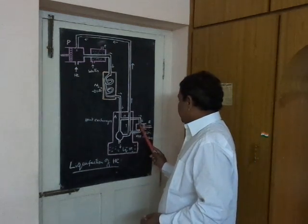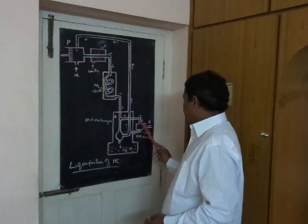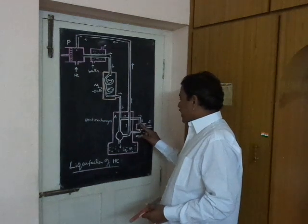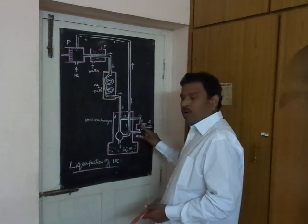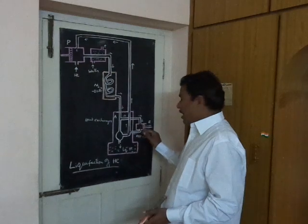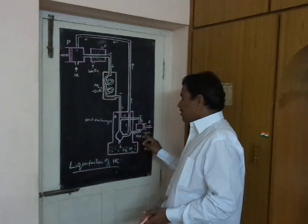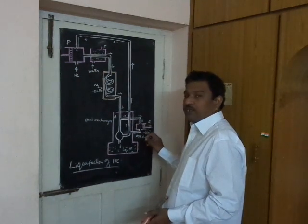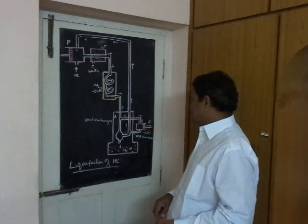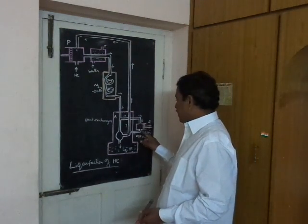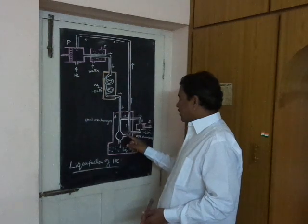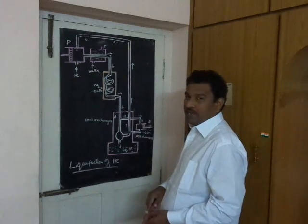The gas which enters into the expansion chamber undergoes adiabatic expansion and its temperature is further reduced to about minus 265 degrees centigrade. That cooled gas is then transmitted to the Dewar flask.